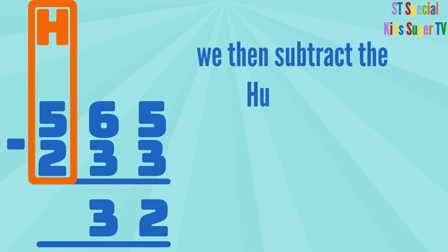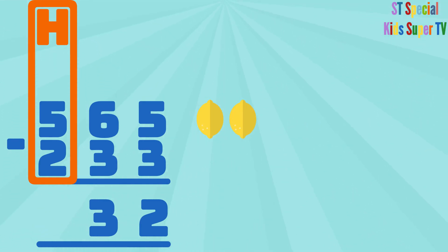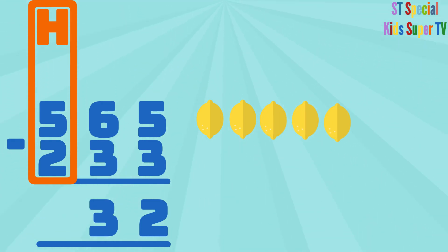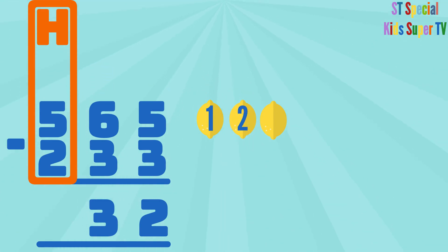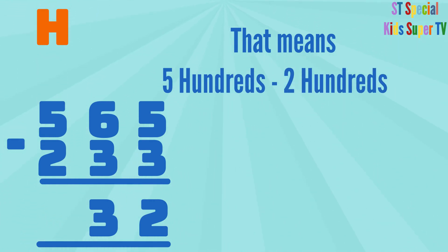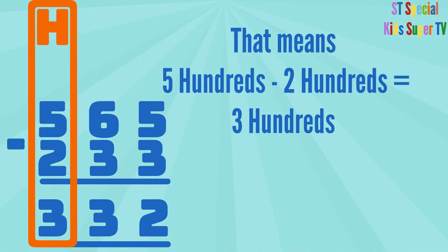We then subtract the hundreds: 5 hundreds minus 2 hundreds. 1, 2, 3, 4, 5 lemons minus 1, 2 lemons equals 1, 2, 3 lemons. That means 5 hundreds minus 2 hundreds equals 3 hundreds. So you write the 3 under the hundreds column.